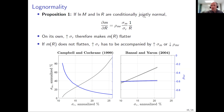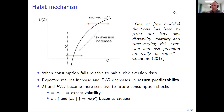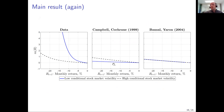This is a statistical-mathematical result directly applicable to these models because they are conditionally jointly log-normal. How does this connect to the economics? Let me walk through the habit model in detail. I rely on how John Cochrane explains it in his macro finance survey. The quote: 'The habit model's function has been to point out how predictability, volatility, and time-varying risk aversion and risk premium are really the same.' I'll argue this is also the reason why the model makes this counterfactual prediction — and why the mechanism is actually needed for the model to have interesting economic implications.